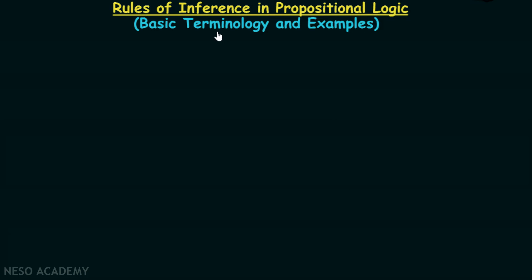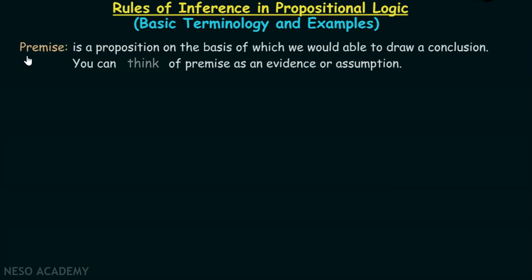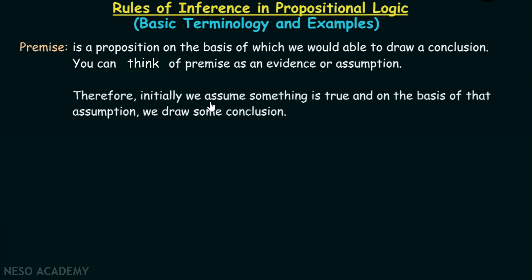Let's consider our first term, that is premise. A premise is a proposition on the basis of which we would be able to draw a conclusion. You can think of a premise as an evidence or assumption. Initially we assume something is true and on the basis of that assumption, we draw some conclusion.